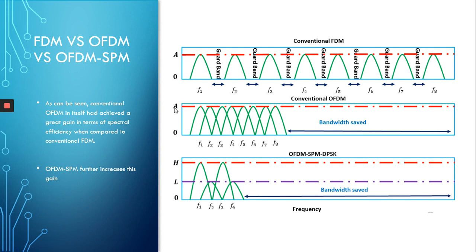Here we have a small diagram to show how OFDM is different from conventional FDM, and how OFDM-SPM is different from conventional OFDM. When using conventional FDM, between every two subcarriers we have to put a guard band to ensure no interference between them — as you can see, this uses and wastes a lot of the frequency band.